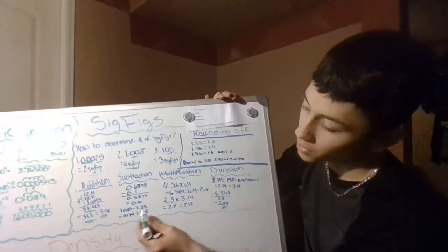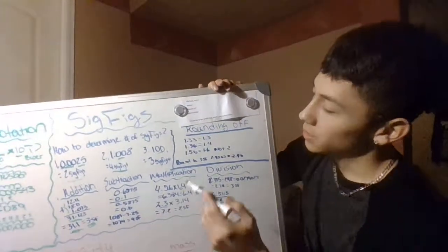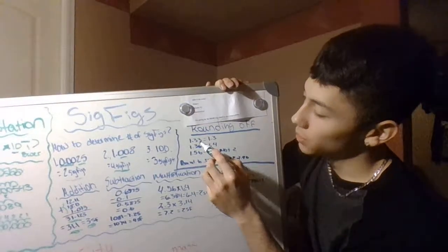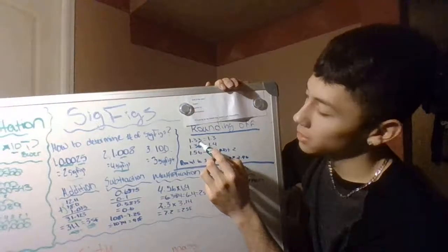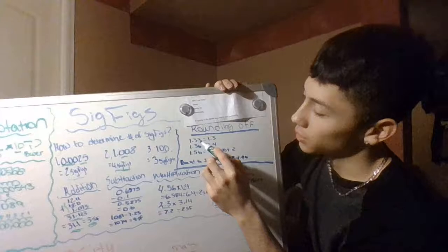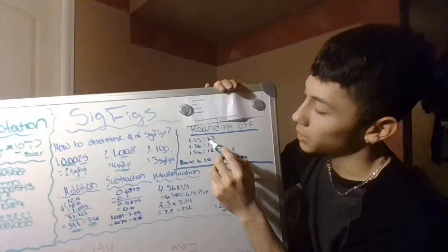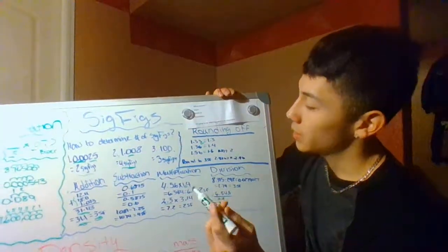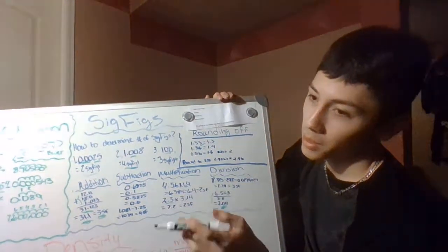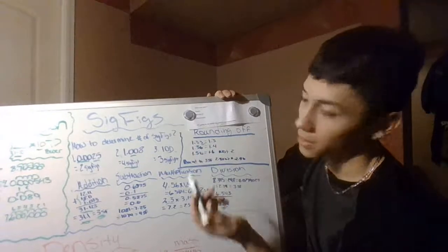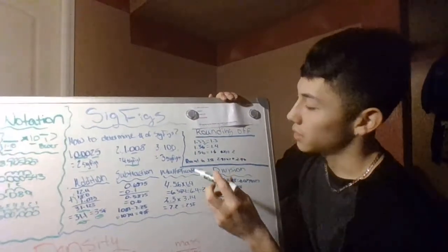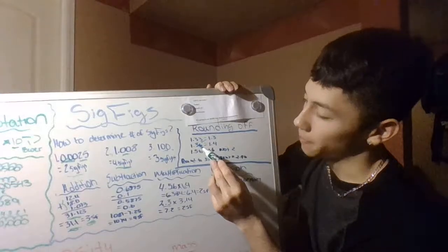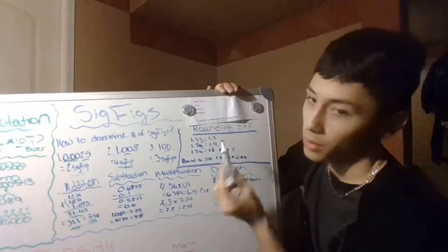The rules of rounding: take 1.33 — you always look at the number to the right of where you want to round. So 1.33 rounds to 1.3. If that second three were a five or six, it would round up to 1.4. Another example: 1.36 — since the 6 is greater than five, you round the 3 up, giving you 1.4.